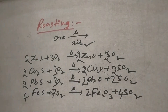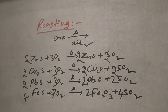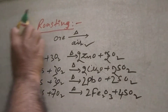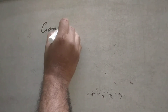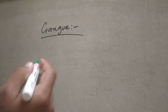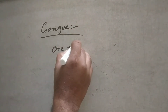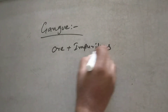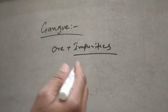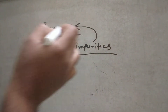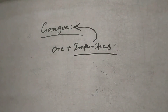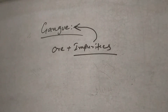Heating in the presence of air — we can call it roasting. Next terminology is gangue. Gangue refers to the impurities present in the ore. That is known as gangue.